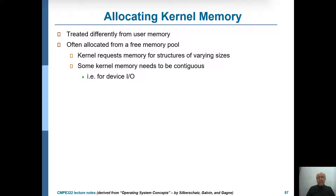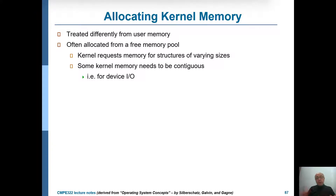Another reason for treating kernel memory allocation in a different way is that the kernel sometimes needs not small sizes but actually many pages, and those pages should be contiguous — meaning the pages should come one after the other.